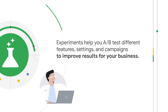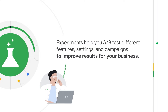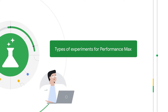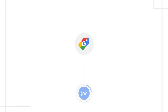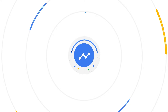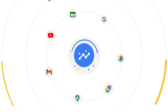If this is the first time you're hearing about experiments, they're tools in Google Ads that help you A/B test different features, settings, and campaigns to improve results for your business. For Performance Max specifically, you can run an experiment to measure the incremental conversion uplift from adding Performance Max campaigns to your existing campaign mix, or directly compare results from Performance Max campaigns head-to-head against standard shopping campaigns. This helps you understand the performance uplift you'd get from switching to Performance Max to access the full range of Google channels and inventory.